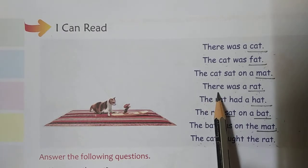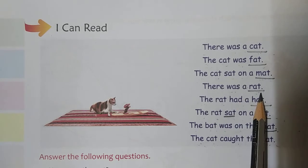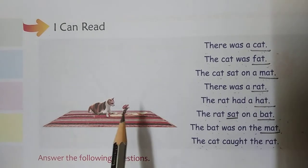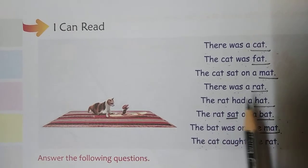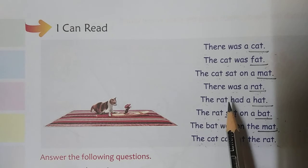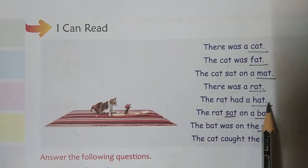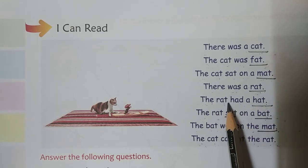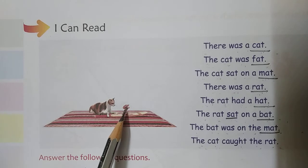T-H-E-R-E, there. W-A-S, was, a R-A-T, rat. There was a rat. Look here, this is a rat. T-H-E, the, R-A-T, rat. H-A-D, had, a H-A-T, hat. The rat had a hat.